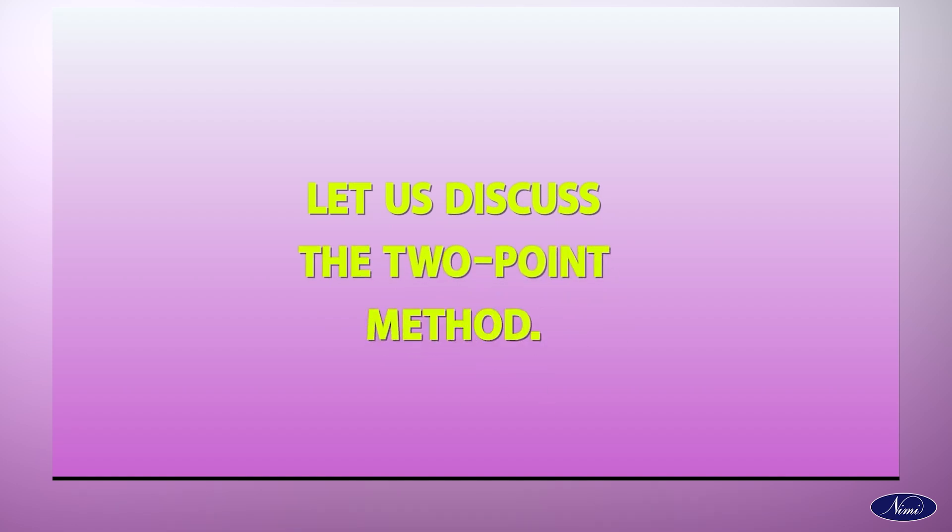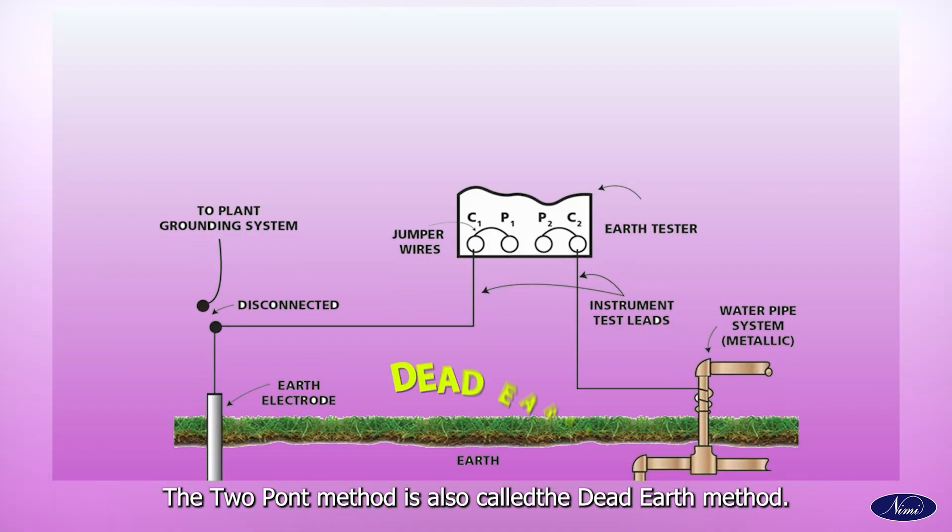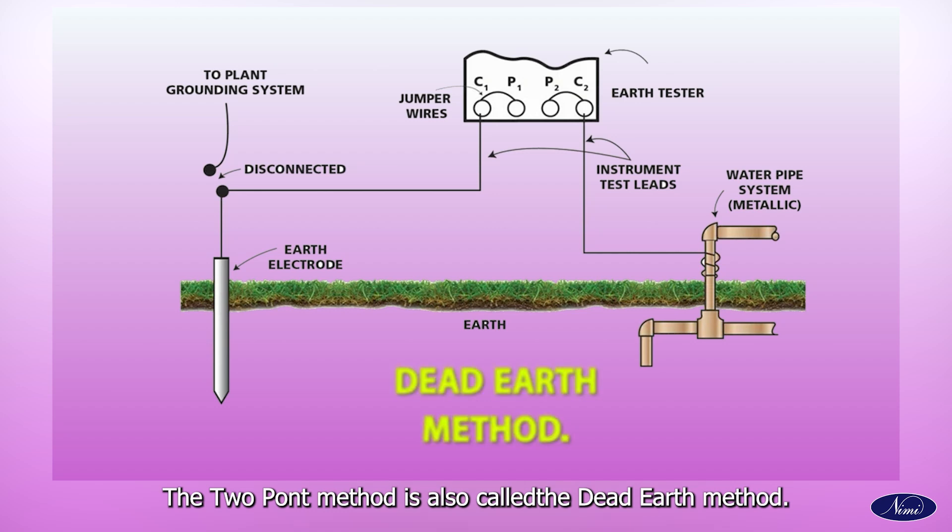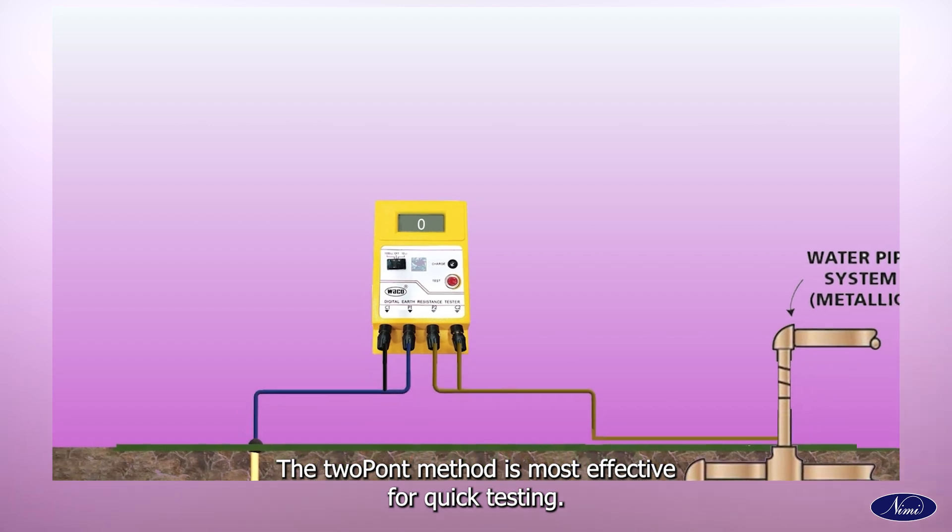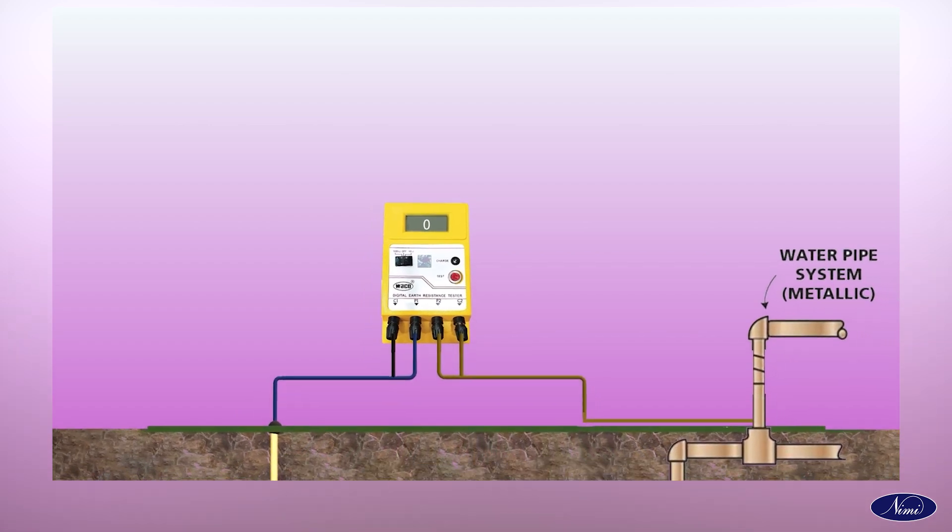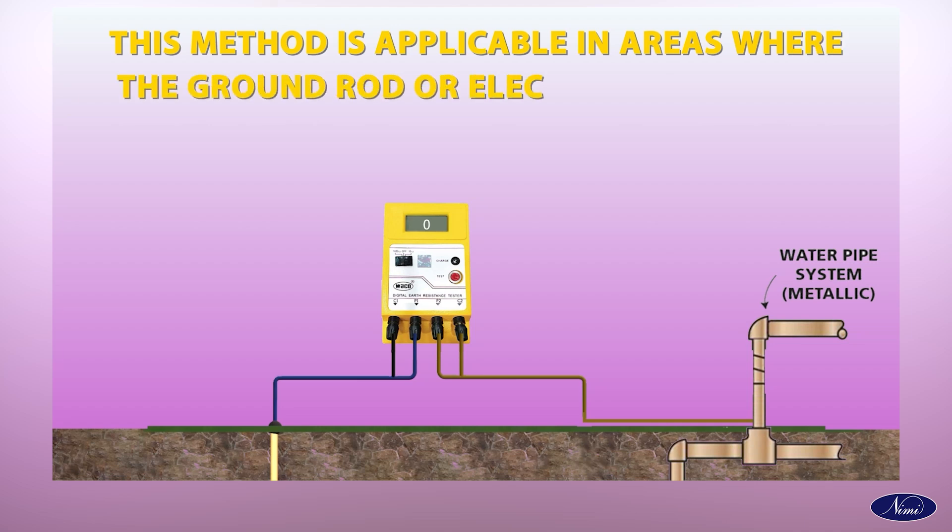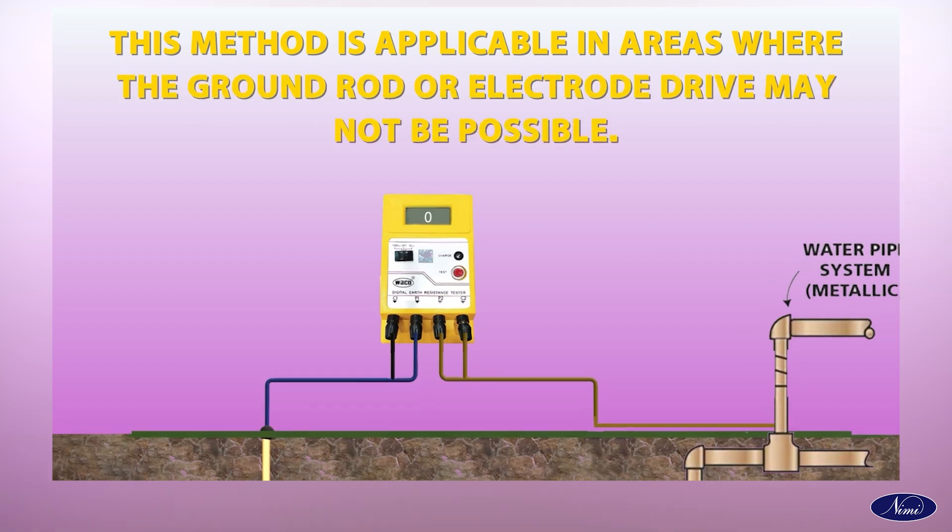Let us discuss the two-point method. The two-point method is also called the dead-earth method. The two-point method is most effective for quick testing.